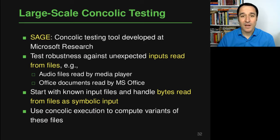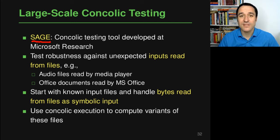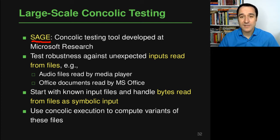This example of a large-scale use of concolic testing is based on a tool called SAGE. SAGE is an implementation of concolic testing, basically as we've seen it here in the lecture, and was developed a couple of years ago at Microsoft Research. SAGE is used to test the robustness of a large set of programs against unexpected inputs that are read from files.